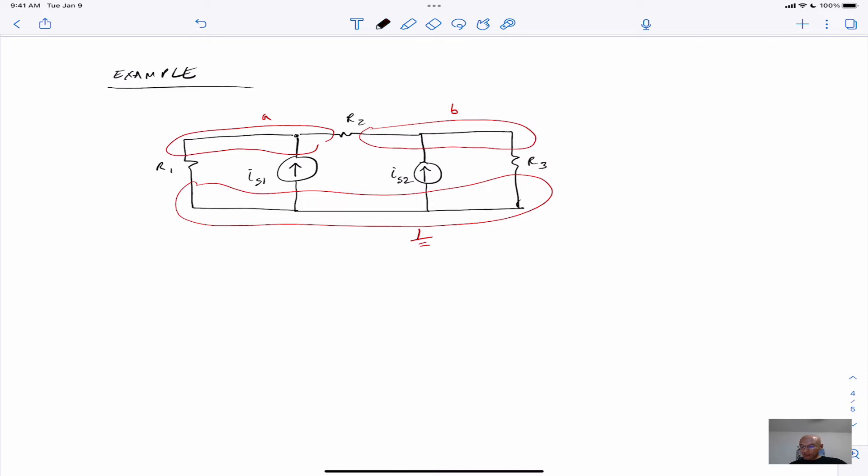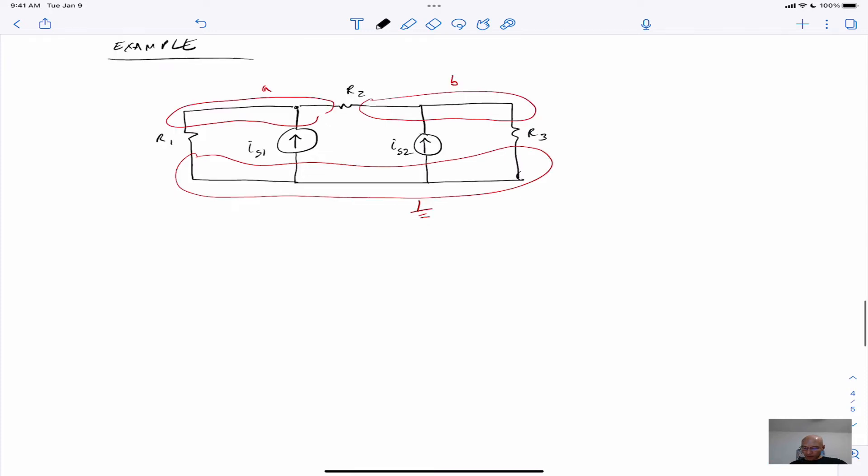We will just do it the hard way and we'll show that we end up with the by-inspection method. So for node A, we have the following KCL equation. So I've identified some currents, I1 and I_AB. Using Ohm's law, this becomes...